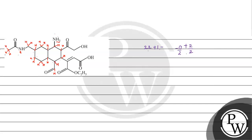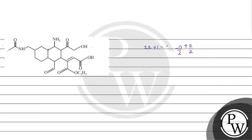After counting, we get 22 and the hydrogen count comes to 32. So the calculation is: 23 minus 16 plus 1, which gives us 24 minus 16, equal to 8. The double bond equivalent value is 8.